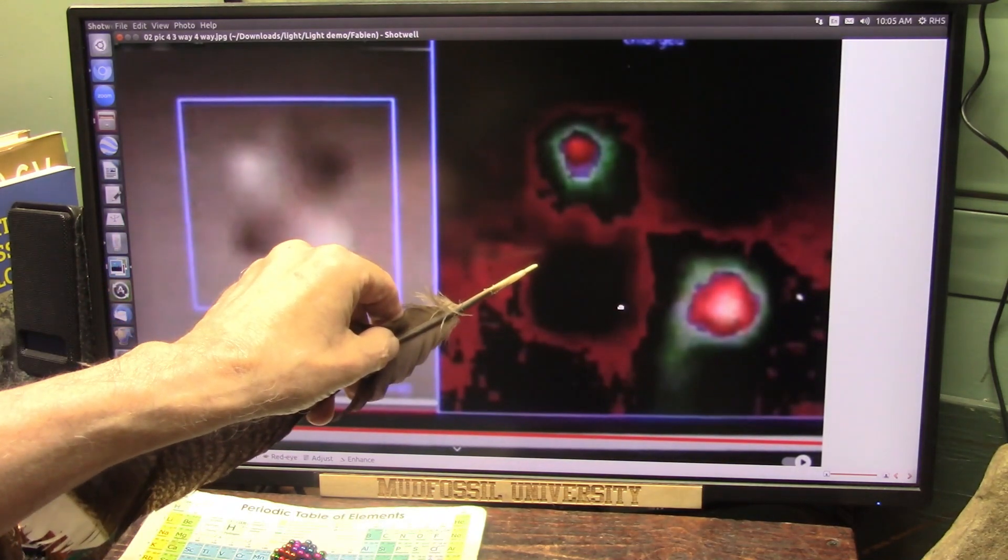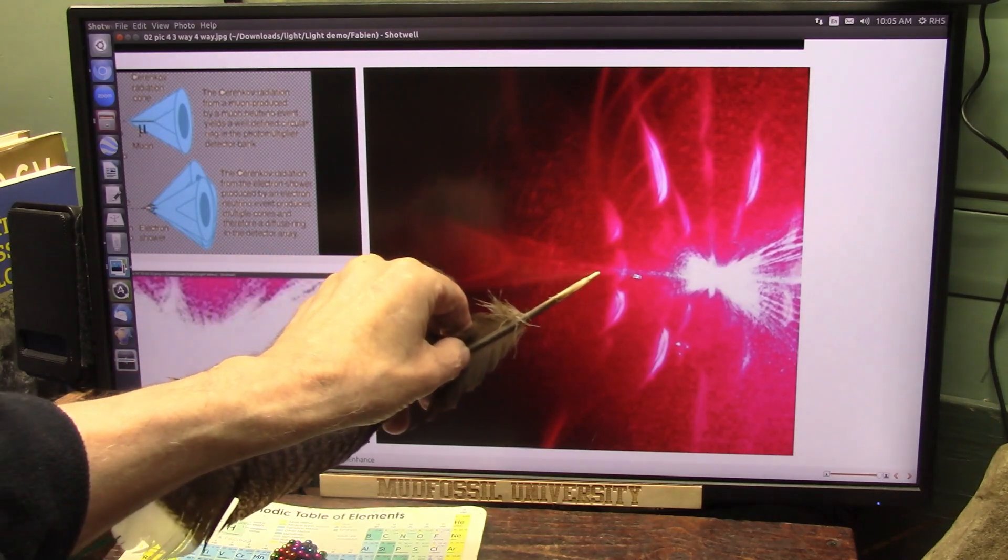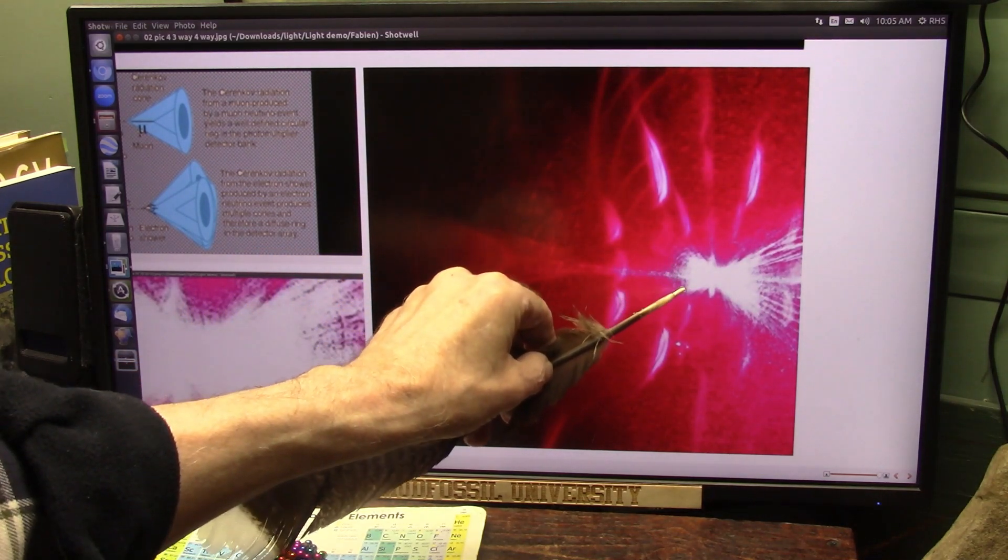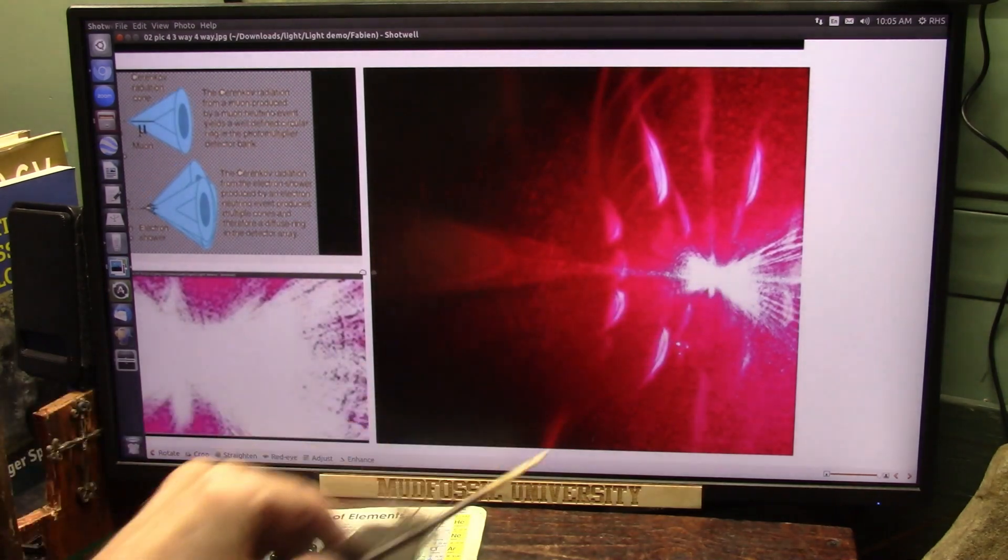However, once we put it through our venturi, all things changed. It accelerated like crazy, that particle, and broke apart here. And it came back to here. In the middle is electron showers.